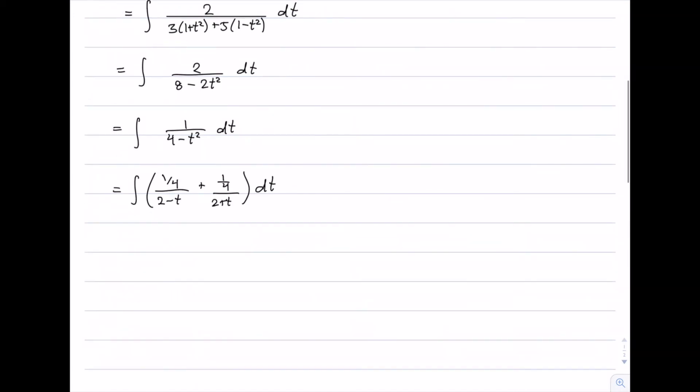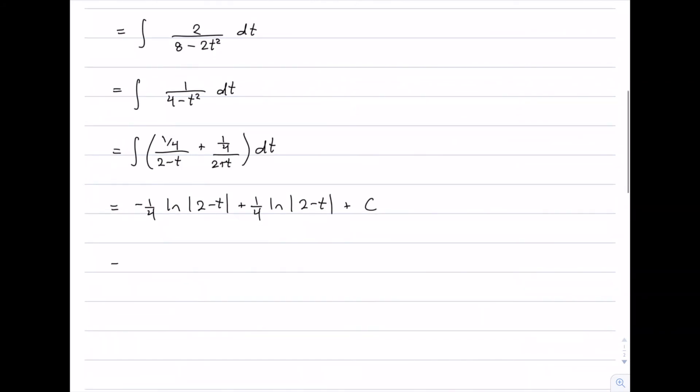And now these are pretty simple to integrate. We're going to have minus a quarter log of 2 minus t plus a quarter log of 2 plus t. Now since these are both logs and they both have a coefficient of a quarter, we can combine them. So it's going to end up being a quarter log of 2 plus t over 2 minus t, and then plus a constant.